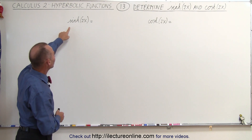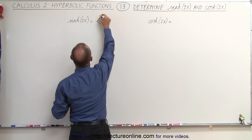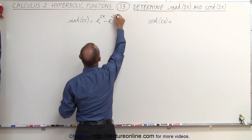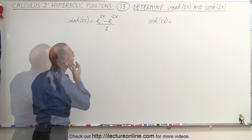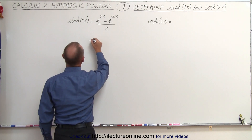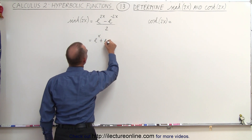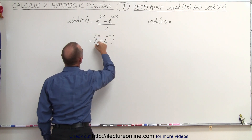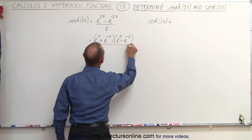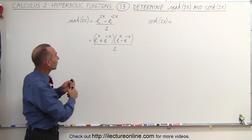What we're going to do is expand this as follows. We're going to write sinh(2x) as e to the 2x minus e to the minus 2x, all divided by 2. What we can do now is expand that even further. We can write this as e to the x plus e to the minus x, times e to the x minus e to the minus x, divided by 2. Now let's verify that's true by multiplying this together to see if we get back the original.